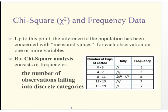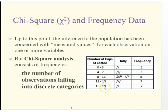When we're talking about frequency data, we literally are just saying: imagine we have one variable — the number of cups of coffee you drink in a day — and you're grouping these into different categories: zero to three cups, four to seven, eight to eleven, and so on. We go out and see how many observations, in this case people, fall into each category. We just tally it up and end up with a frequency for each class.